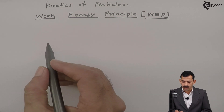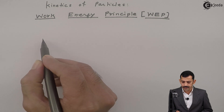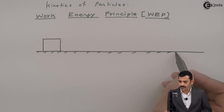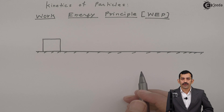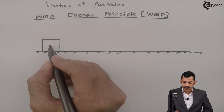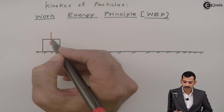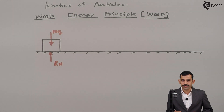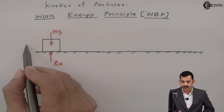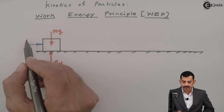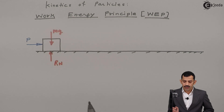Let's assume a block at rest on a horizontal plane. If we draw the free body diagram of this block, the weight of this block acts in the downward direction and we get a normal reaction developed at the contact surface. So the weight is M times G, and the normal reaction Rn acts on the block. Now, if this block is subjected to a resultant force acting in the horizontal direction — say rightward — with magnitude P, and assuming a frictionless surface, the resultant force acts in the rightward direction.